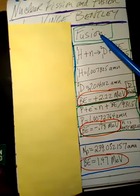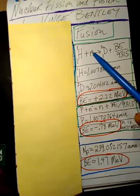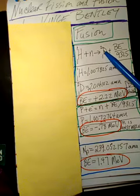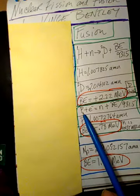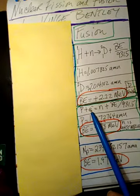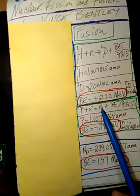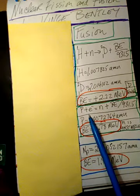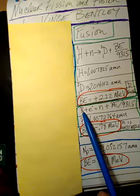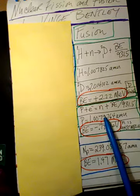That's one fusion reaction. Again, fusion means we put things together and they become one thing. Let's try another fusion reaction: we're going to put a proton together with an electron and form a neutron, plus the binding energy of the neutron. We'll need the atomic mass unit of the proton.